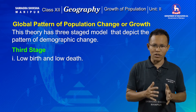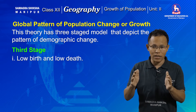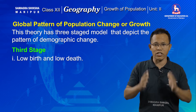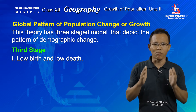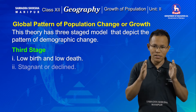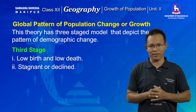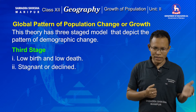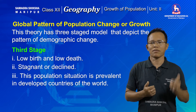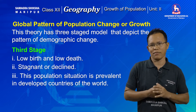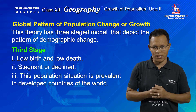The third stage of demographic transition theory is characterized by low birth and low death. Therefore the population of the country or the world as a whole remains more or less stagnant or declines. This population situation is mainly prevalent in developed countries.